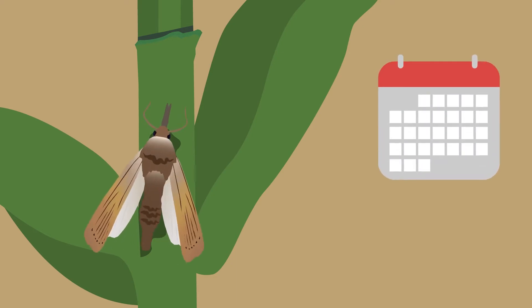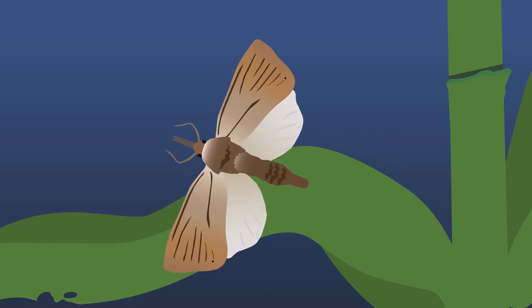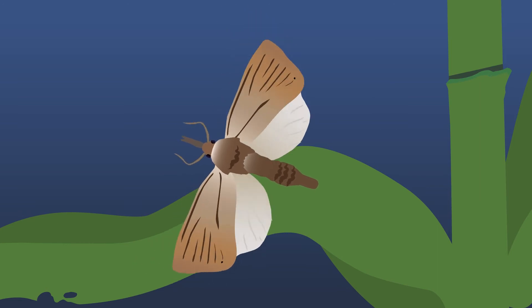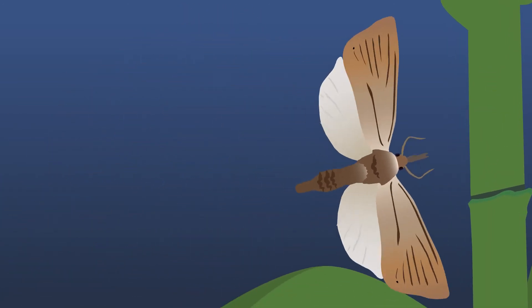They emerge as an adult stem borer in five to twelve days. Adult stem borers are active at night and rest on the plants during the day. They are smaller moths with light yellow-brown wings.